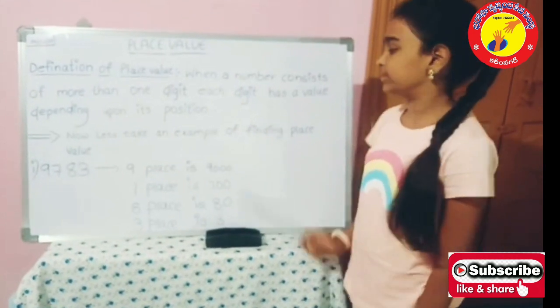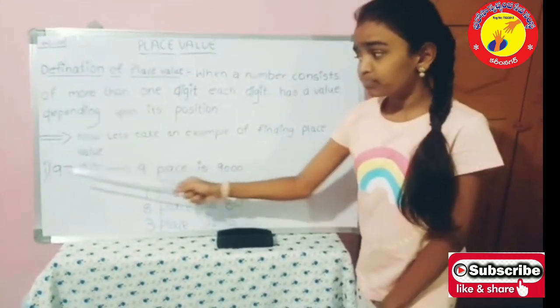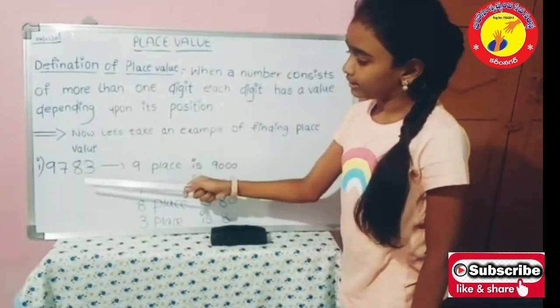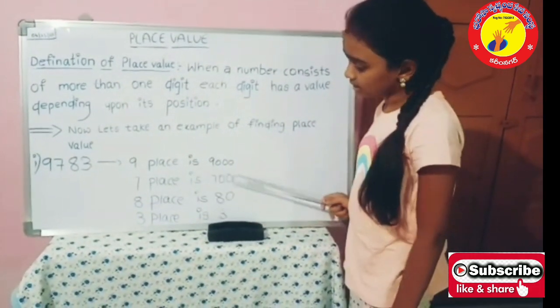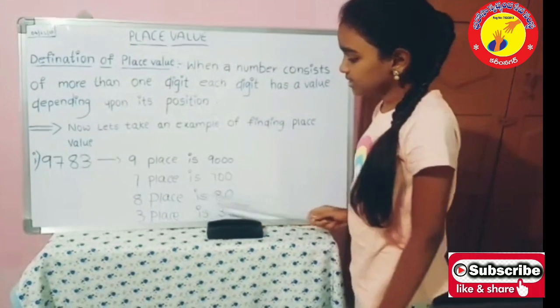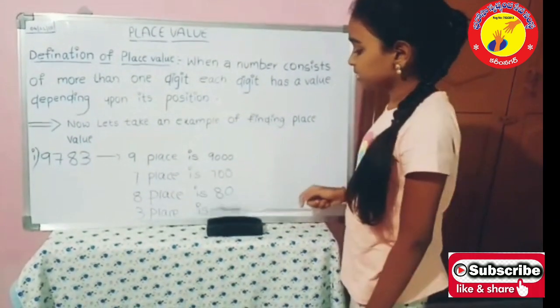Now, let's take an example of finding place value. 9,783. 9 place is 9000. 7 place is 700. 8 place is 80. 3 place is 3.